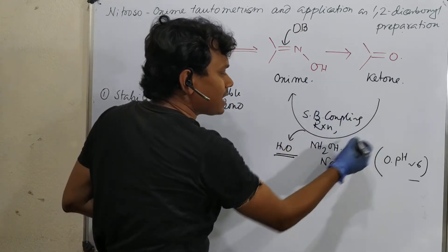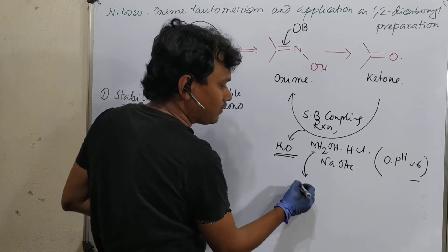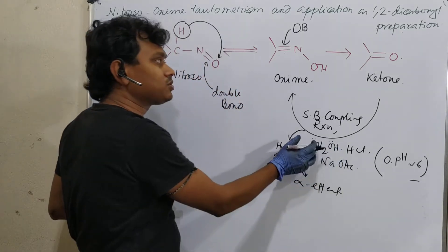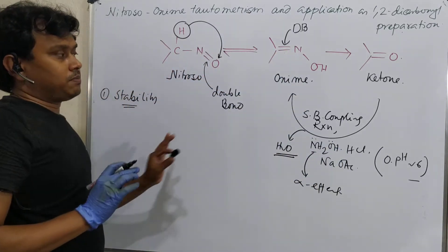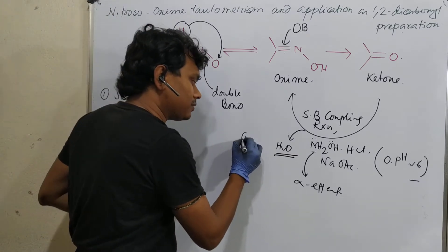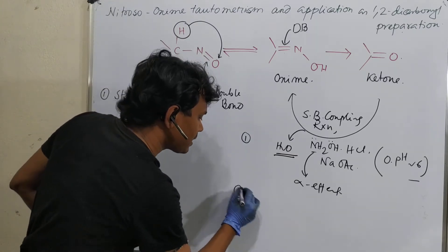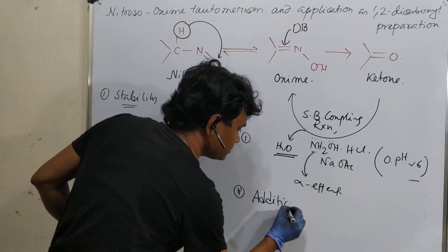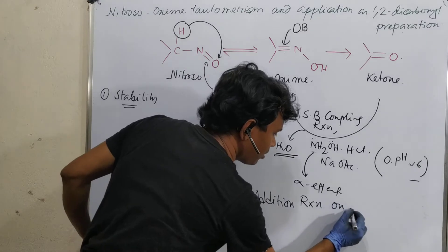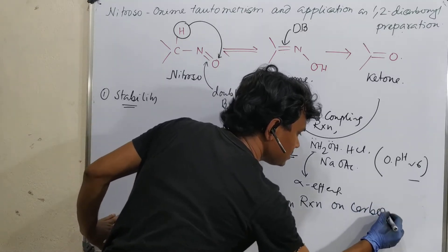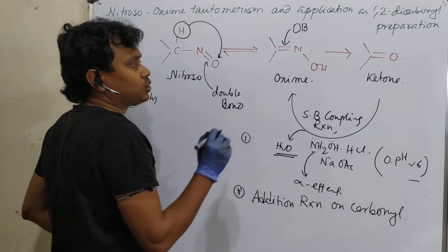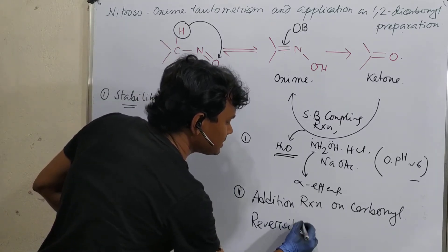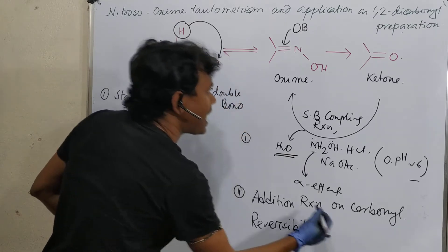So this thing you can remember that reaction of hydroxyl amine, which has an alpha effect. That is, repulsion between these lone pairs which makes it more reactive. So this is point number one. And point number two is, addition reaction on carbonyl is reversible. So addition reaction on carbonyl could be reversible. So this reversibility is the logic for.